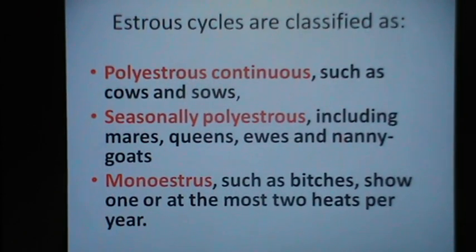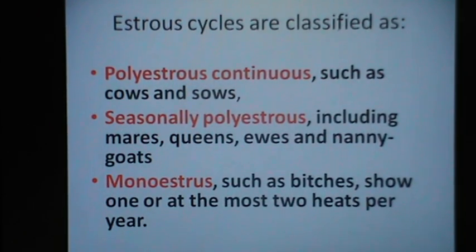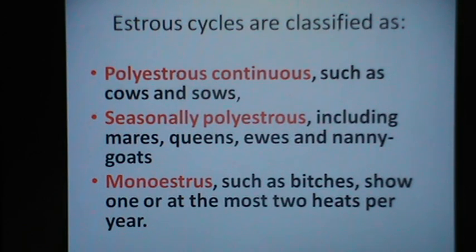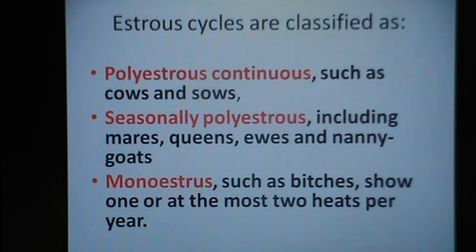Estrus cycles have been classified based on the repeatability of the estrus in different farm animals. Animals are either polyestrous continuous, such as cows and sows; they are seasonally polyestrous — during a particular season they come into estrus a number of times, including mares, queens, ewes and nanny goats; and they are monoestrous — they come into estrus only once during the year, such as bitches which show one or at most two heats per year.